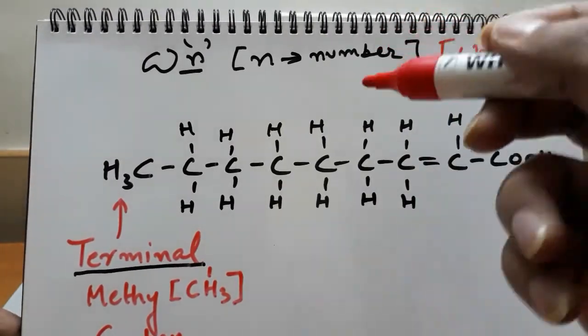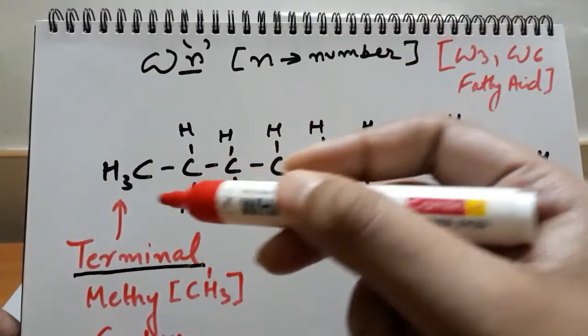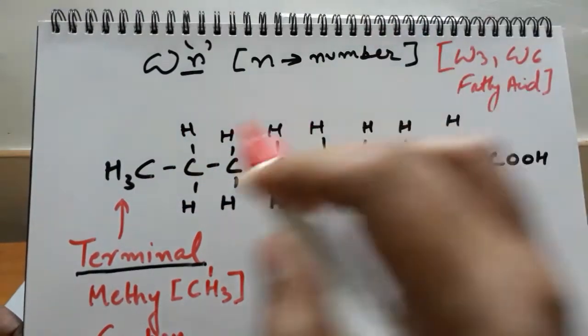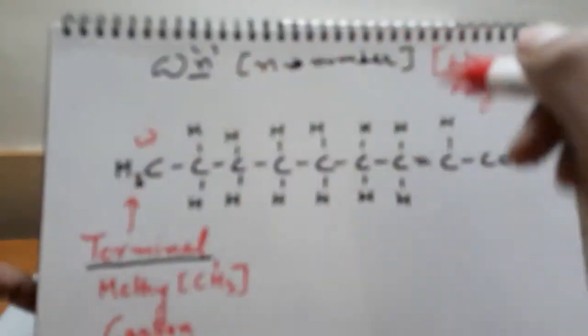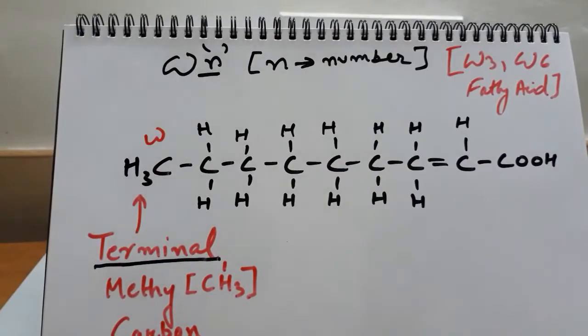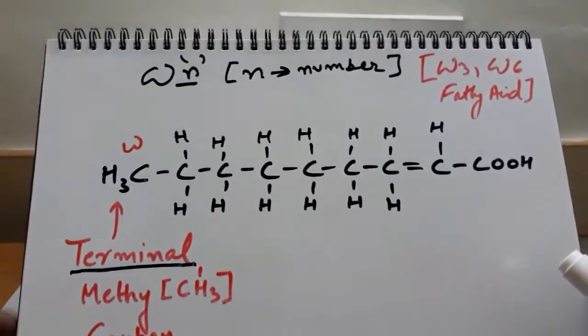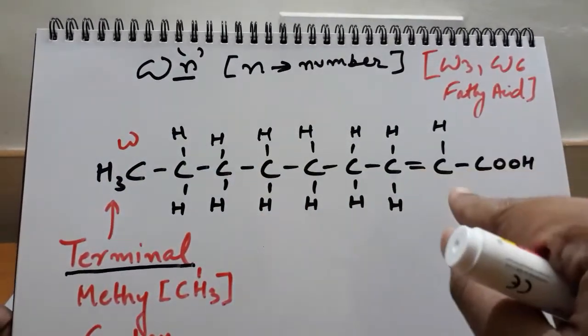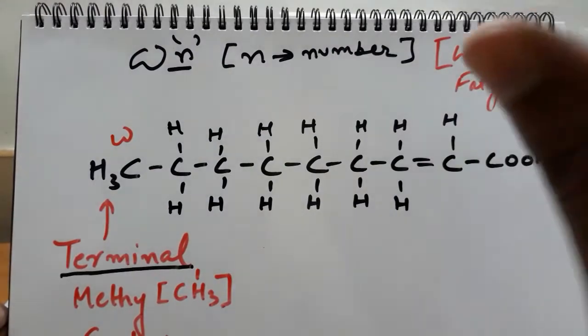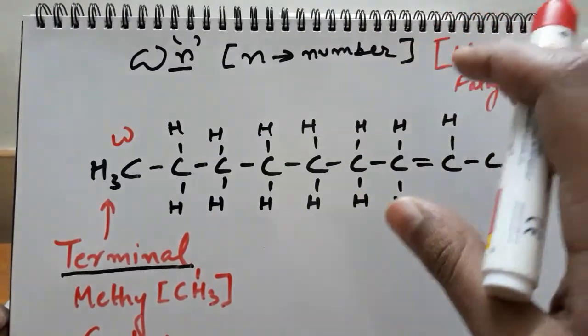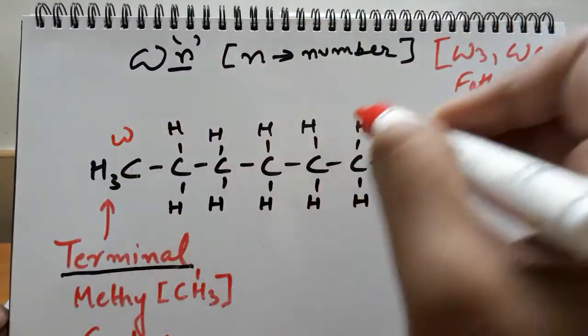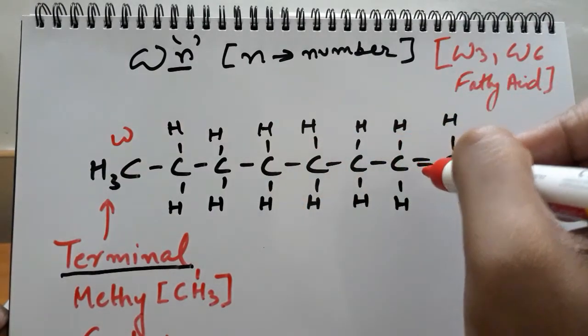First, we identify the omega carbon. Here it is - the omega carbon, also known as the terminal methyl carbon. You can see it's the terminal methyl carbon. With respect to this double bond, we now count the number of carbons to where